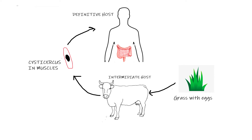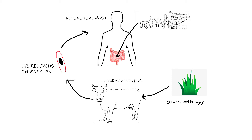After it got swallowed, it gets to the small intestine and attaches to the wall of the small intestine. There it starts to grow, and this is a really big worm — its length can be even up to 10 meters. By the way, the length of the small intestine is approximately 8 meters, so it can be even longer than the small intestine.